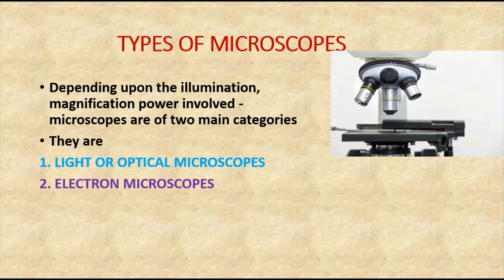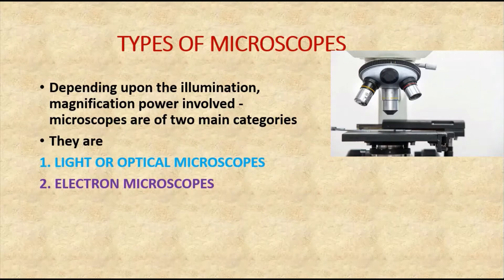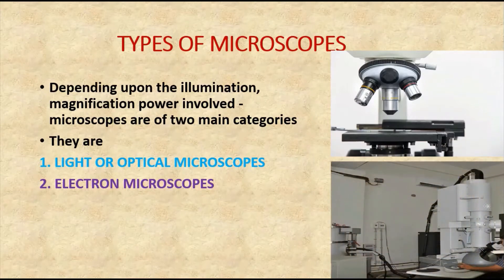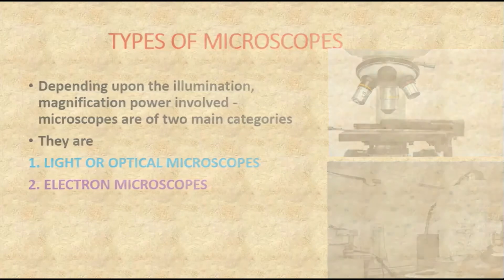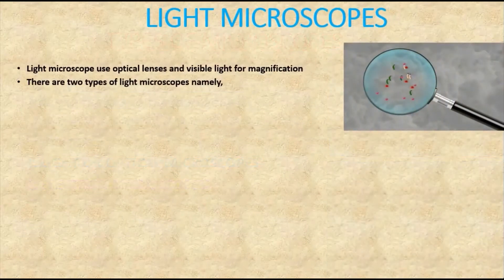The second category is the electron microscope, where magnification is achieved with the help of a beam of electrons in place of optical lenses or light. Under the electron microscope we have the scanning electron microscope and the transmission electron microscope.